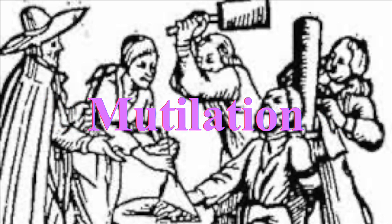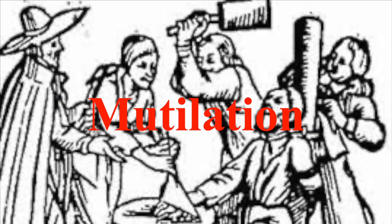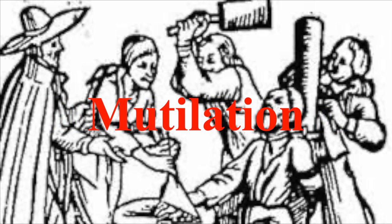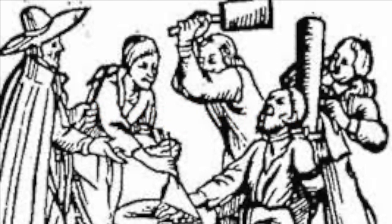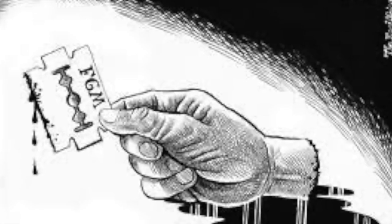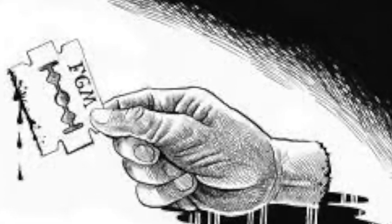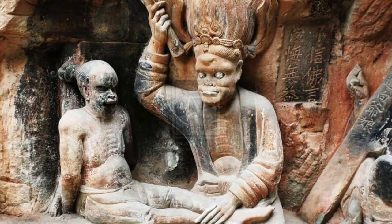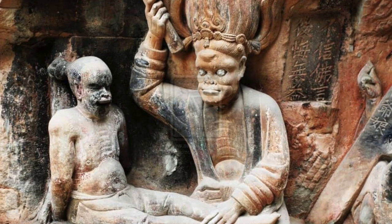The next type is mutilation. This mode of punishment was known to have been in practice in ancient India during the Hindu period. One or both hands of a person who committed theft were chopped off, and if he indulged in a sex crime, his private part was cut off.